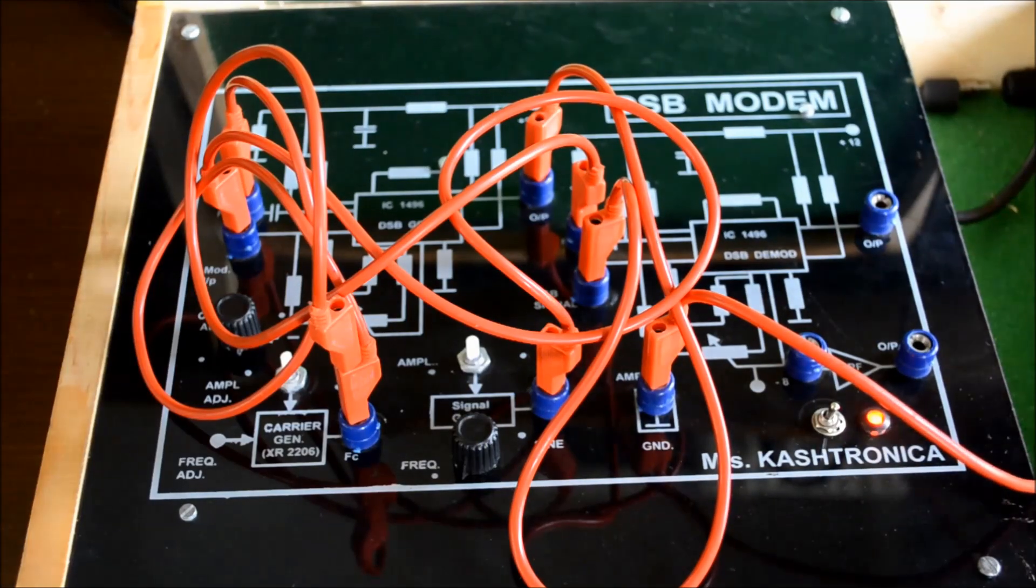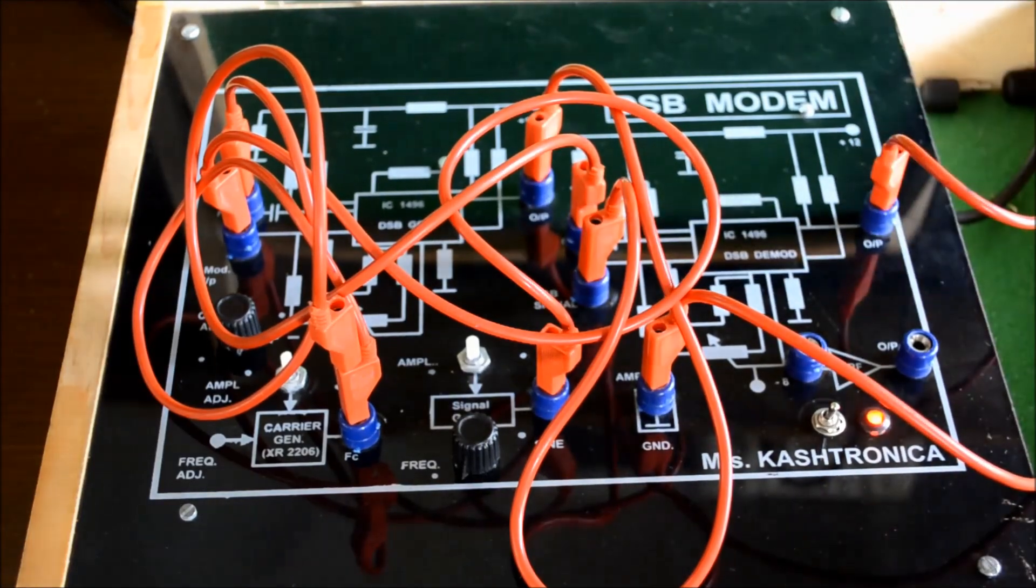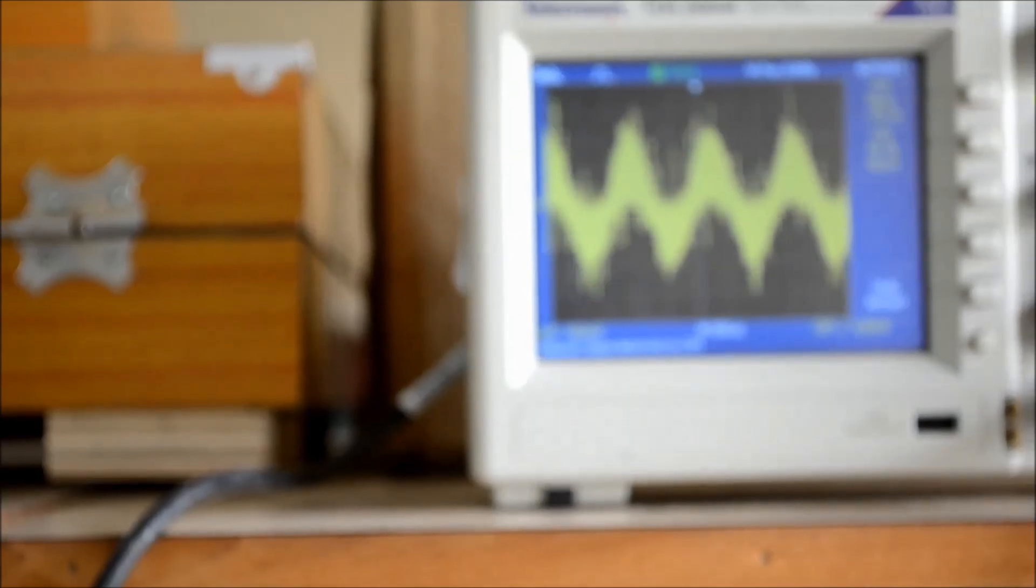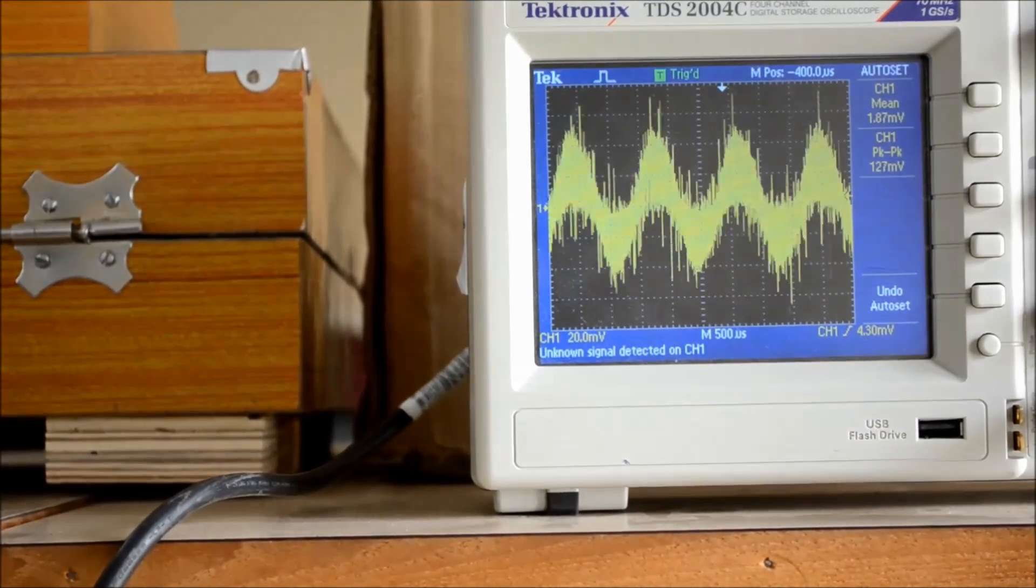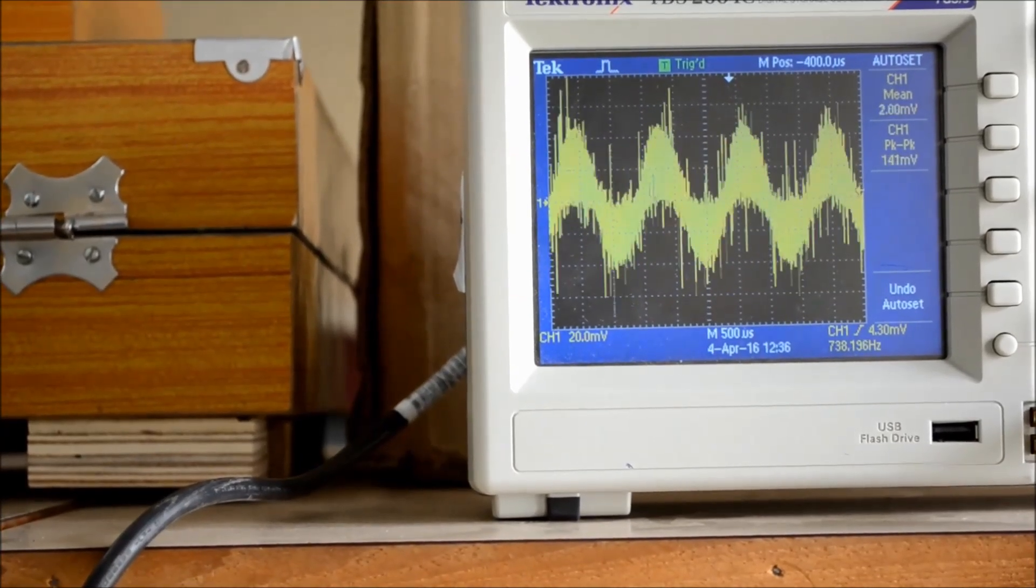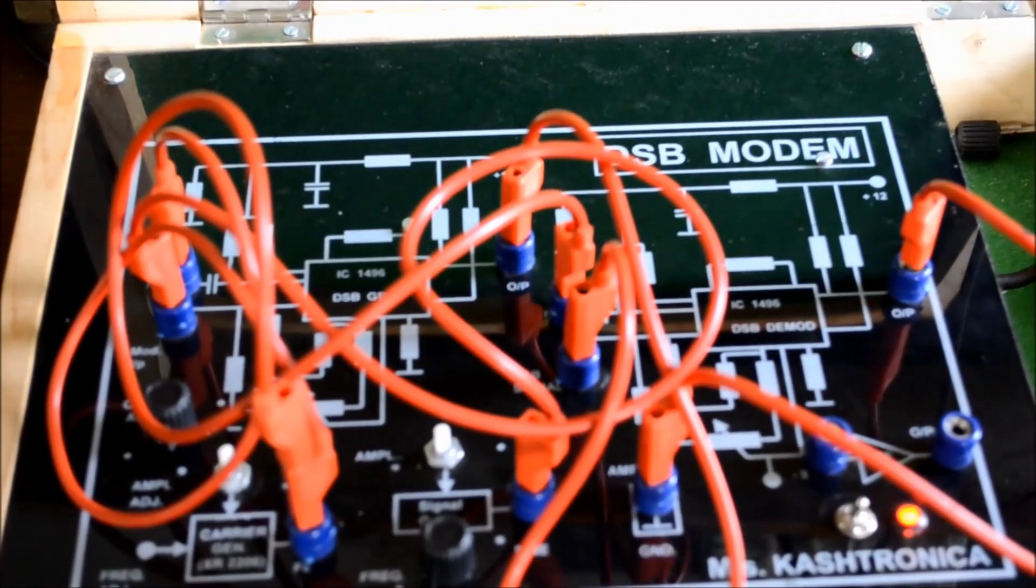Now the output of the detector, you can see on the DSO. So for that purpose, we are using a low-pass filter to get the proper demodulation. Now we are giving the output of the detector to the low-pass filter.